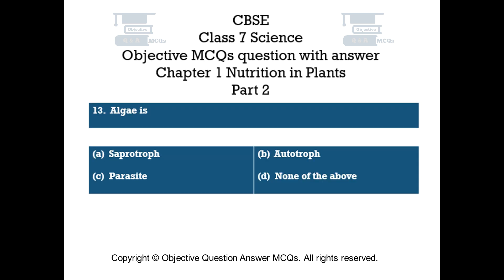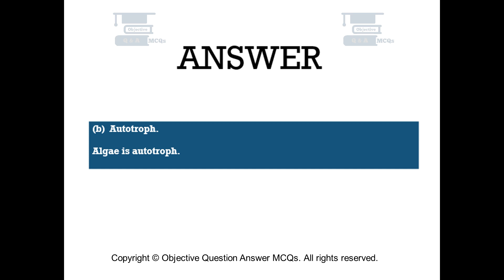Question number 13: Algae is. Option A: saprotroph. Option B: autotroph. Option C: parasite. Option D: none of the above. The right answer is option B — autotroph. Algae is an autotroph.